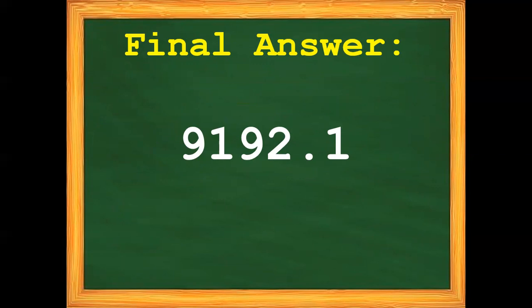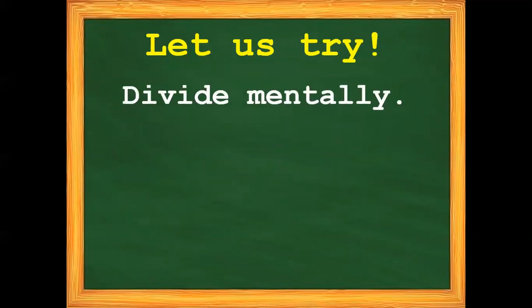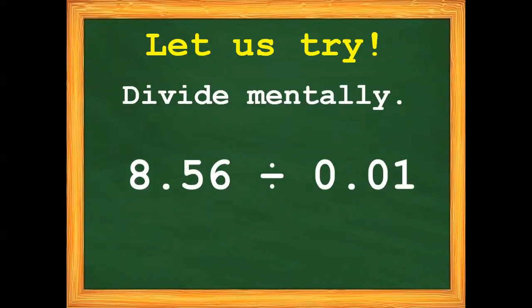This time, you try. It is your time to answer the given exercises. Divide mentally: 8-and-56-hundredths divided by one-hundredth. Your answer is? Very good — it is 856.